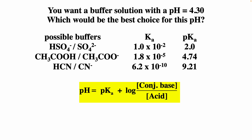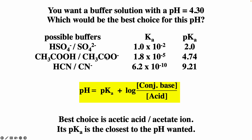To make a buffer with a pH of 4.3, we use the Henderson-Hasselbalch equation. When the base concentration equals the acid concentration, log(base/acid) = 0 and pH = pKa. So we want an acid with a pKa close to 4.3. The acetic acid/acetate ion system with pKa ≈ 4.74 is probably the best choice. Then we modify the ratio of base to acid until we reach the target pH.